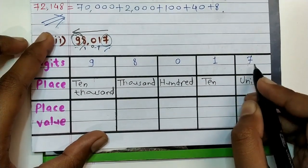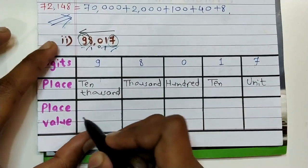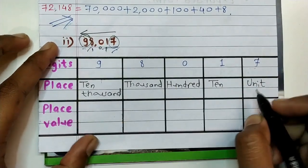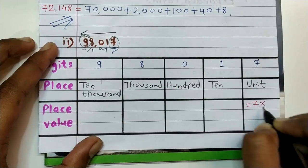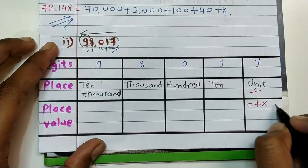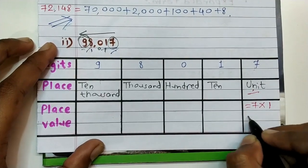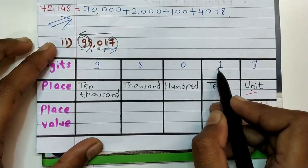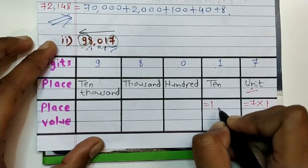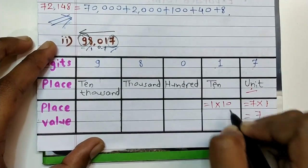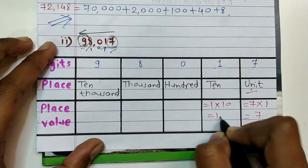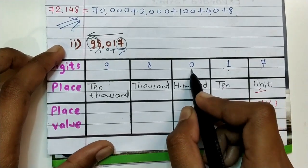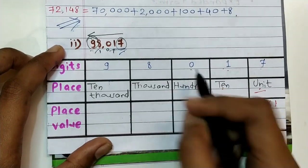And lastly nine is at ten thousands place, so we write ten thousand. Now we calculate place values: place value of seven equals seven into one, which is equal to seven. Place value of one equals one into ten, which is equal to ten.